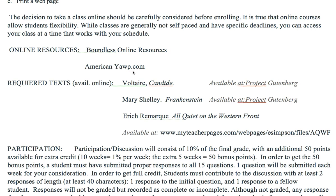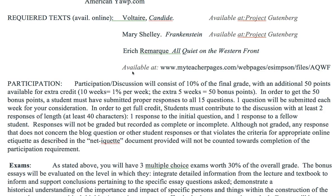Our last source is called All Quiet on the Western Front by Erich Remarque. The text of the book is available at myteacherspages.com, the website listed on the syllabus. It can also be purchased in print form at many discount booksellers and is available in many libraries. Working through the assignments: one of the first assignments is a weekly participation and discussion section that will consist of 10% of the final grade. There is an additional 50 bonus points available if a student completes the first 10 weeks of the discussion requirement — that works out to 1% per week, or 10 points per week, and completing all 10 earns an extra 50 bonus points factored into your grade.